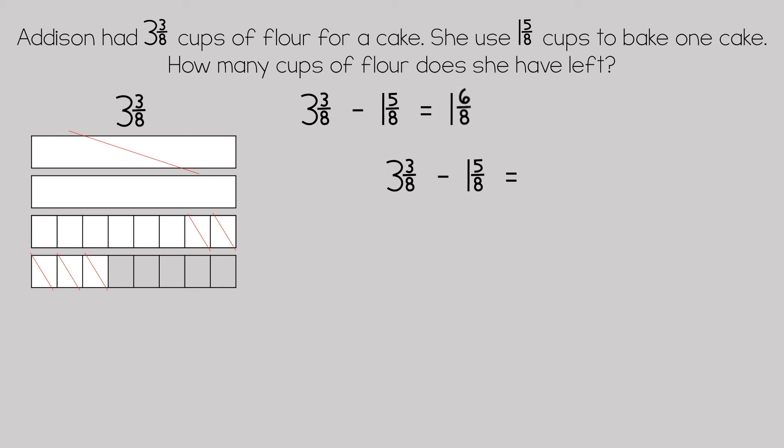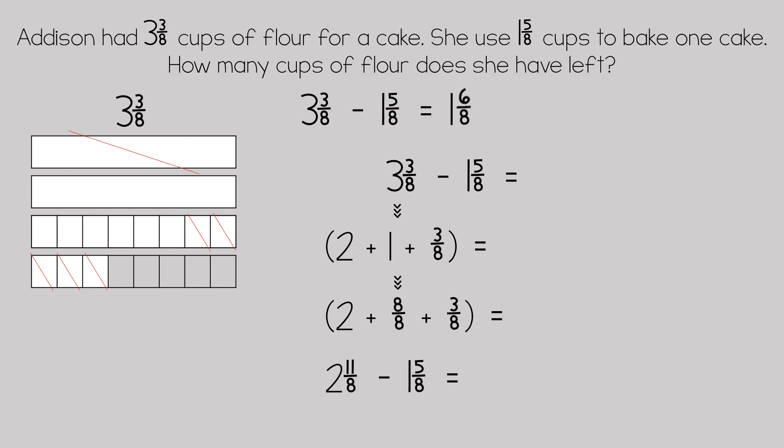Three-eighths minus five-eighths is not something we can do directly, so we regroup and decompose three into two plus one plus three-eighths, and that one becomes eight-eighths. So the new expression is two and eleven-eighths minus one and five-eighths. Eleven-eighths minus five-eighths is six-eighths and two minus one is one, giving us one and six-eighths cups of flour left.